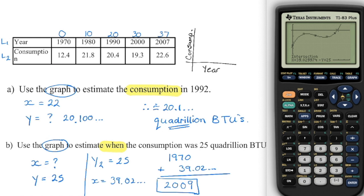One thing to point out: when you see a question that says 'estimate,' it doesn't mean just randomly guess. It means you actually need to use that line or curve of best fit to get the data — that is an estimate. So anytime it says estimate, we need to refer to the graph.